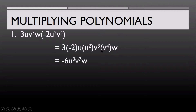Multiplying 3 and negative 2, u and u², v³ and v⁴, and we still have w. So this gives us negative 6u³ — we're just adding the exponents — then v⁷, since 3 plus 4 equals 7, and just copy w. So the final answer is negative 6u³v⁷w.